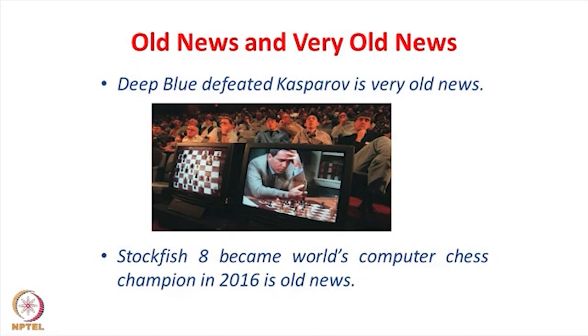Infotech and biotech together are redefining almost all aspects of life. In 1996, a machine defeated the world chess champion — Gary Kasparov. Deep Blue was the name of the machine. Kasparov had a cult-like status in the USSR and then Russia, and people felt huge disappointment that a machine could defeat him. But this is now very old news.